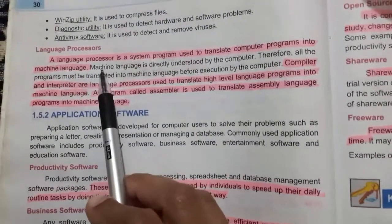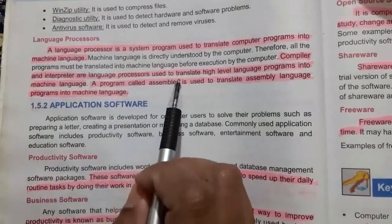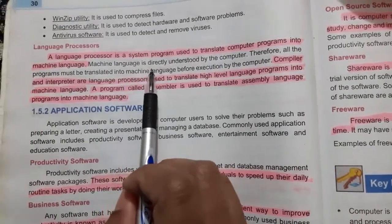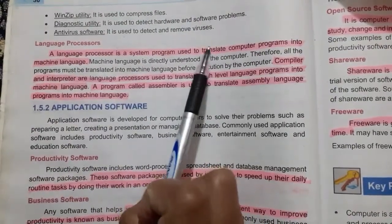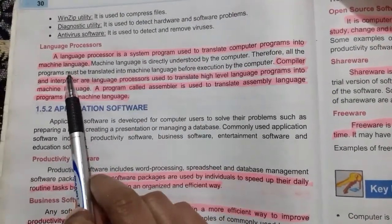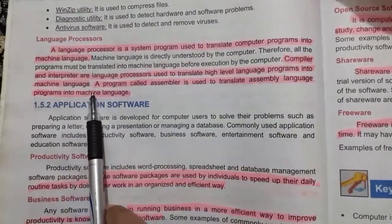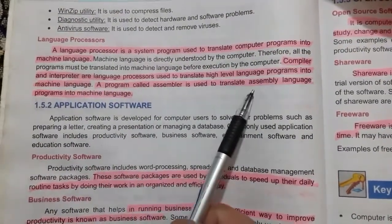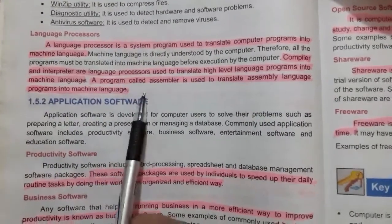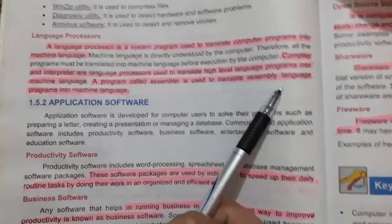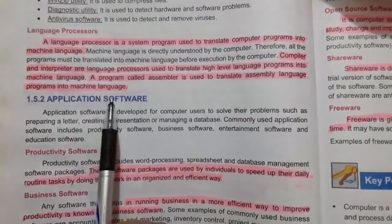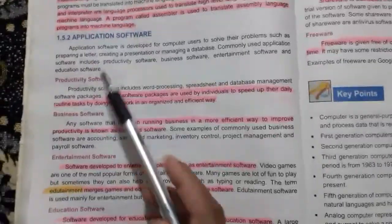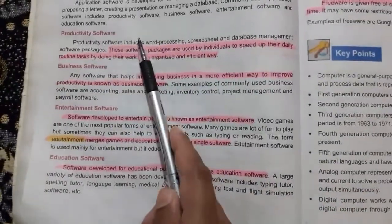Language processors translate from high-level language to low-level language, because all programs nowadays are written in high-level languages while computers understand machine language. A compiler and interpreter translate from high-level to low-level languages, and an assembler specifically translates assembly language into machine language.